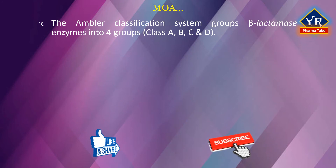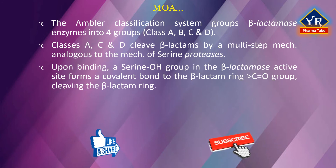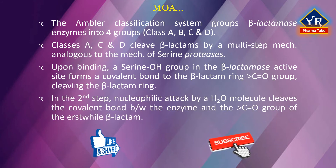The Ambler classification system groups all known beta-lactamase enzymes into four groups — class A, B, C, and D — according to sequence homology and phylogenetic relationships. Classes A, C, and D cleave beta-lactams by a multi-step mechanism analogous to serine proteases. Upon binding, a serine hydroxyl group in the beta-lactamase active site forms a transient covalent bond to the beta-lactam ring carbonyl group, cleaving the beta-lactam ring. In a second step, nucleophilic attack by a water molecule cleaves the covalent bond between the enzyme and the carbonyl group of the erstwhile beta-lactam, allowing the degraded beta-lactam to diffuse away and free the enzyme to process additional beta-lactam molecules.